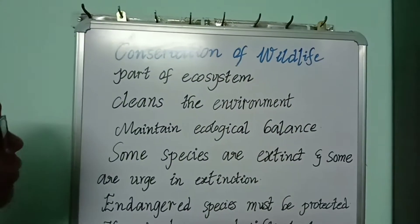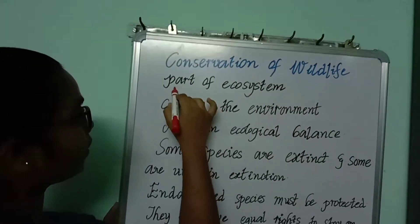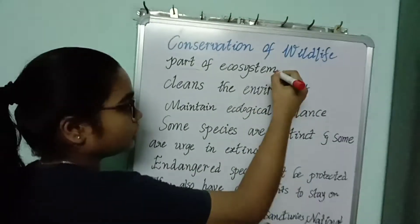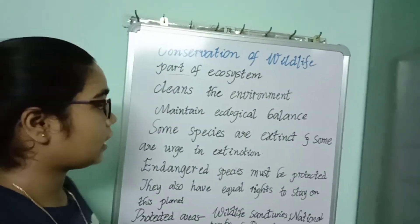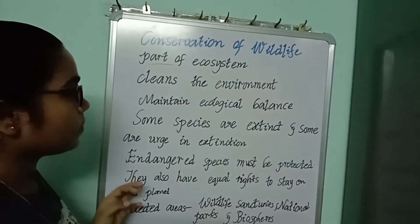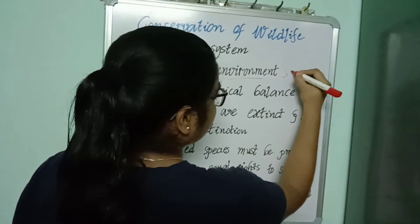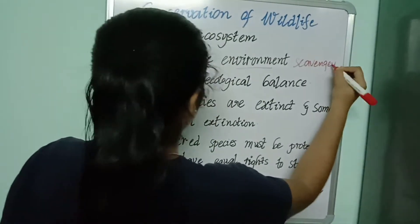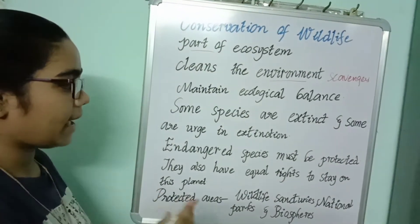Now, conservation of wildlife. Why should we conserve wildlife? Because they are part of the ecosystem. Ecosystem means the interaction between organisms and the physical environment. Some organisms cleanse the environment, such as scavengers. And they maintain ecological balance.